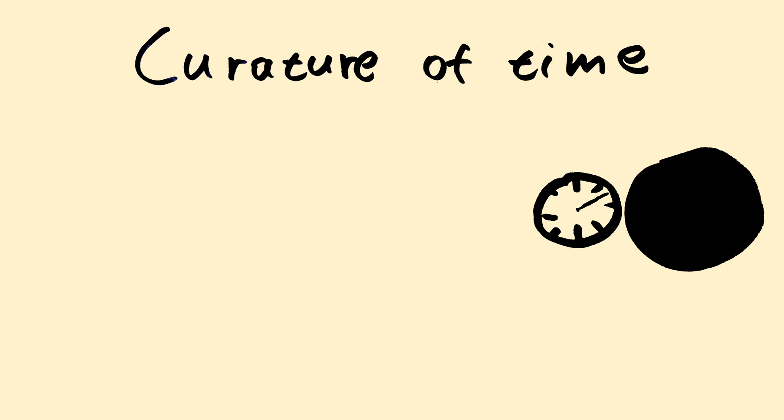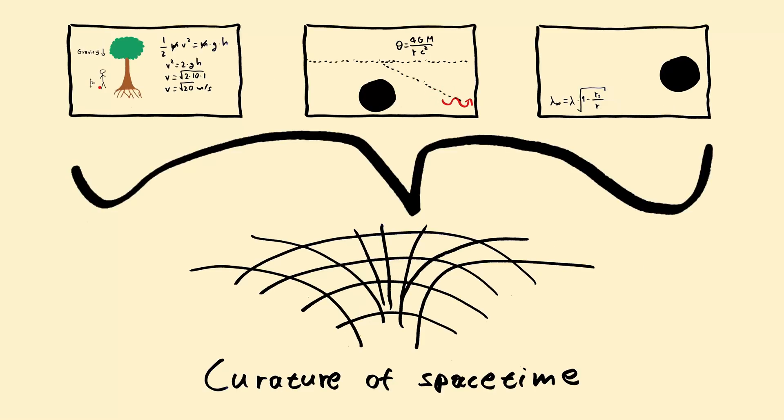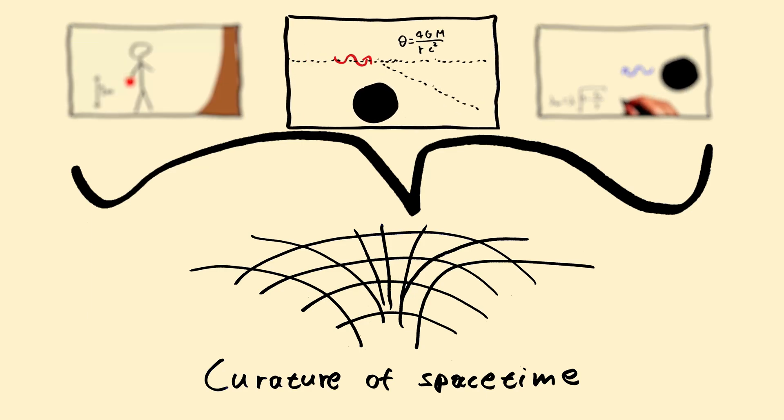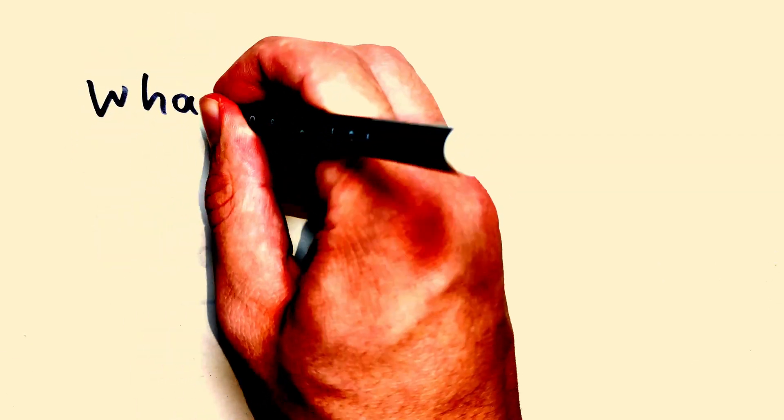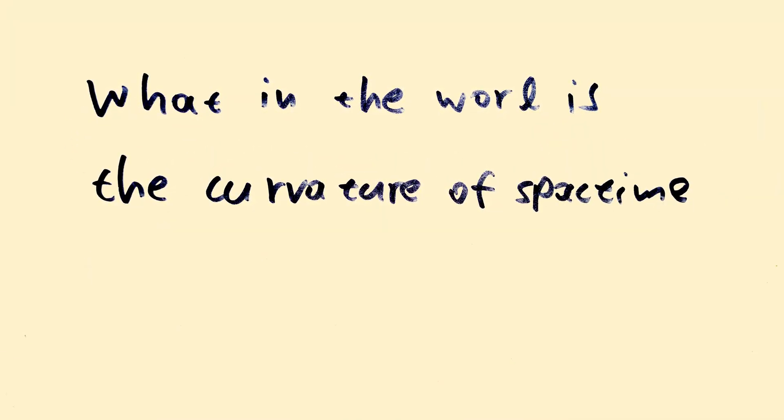The curvature of spacetime is responsible for gravitational lensing as well. Since spacetime itself is curved, light doesn't notice anything. It just follows the spacetime path like normal, thinking it is going at a straight line with constant speed. But the spacetime itself is bent in such a way that it follows a curve, hence the lensing. Now that we know all of that, we can't help but ask, what in the world is the curvature of spacetime? Well, that's a good question for another time.